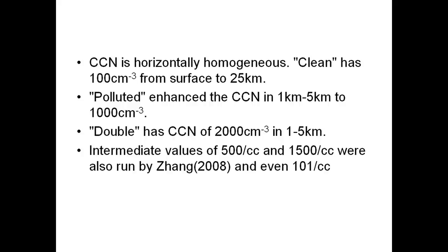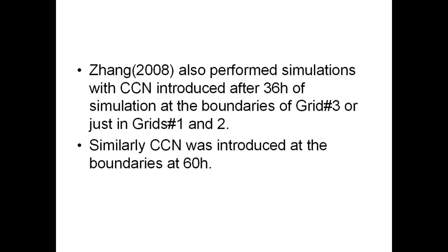She did three RAMS simulations: a clean case with CCN concentration of 100 per cc — that being the background concentration — and a polluted case with enhanced concentrations in the 1 to 5 km layer of 1,000 per cc, then doubled to 2,000 per cc. Later she did simulations at 500 and 1,500 per cc, and even varying from 100 to 101 per cc. She also performed simulations for her dissertation where CCN were introduced after 36 hours of simulation, so the storm evolved in a more mature state, only in grids 1 and 2 before being advected into grid 3, the refined cloud-depicting grid. She also did that at 60 hours.